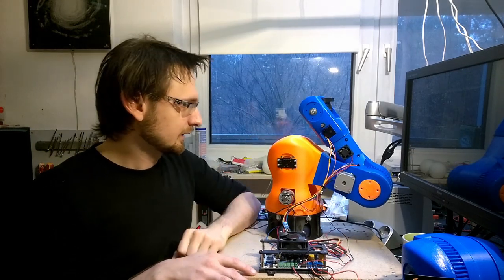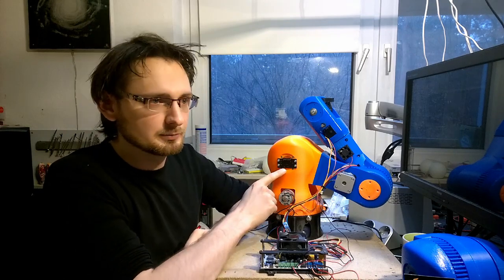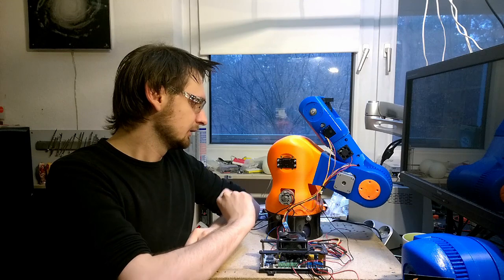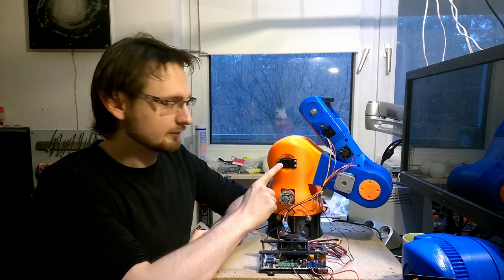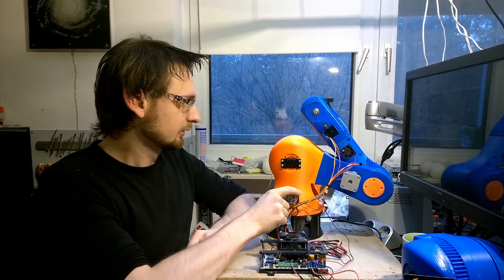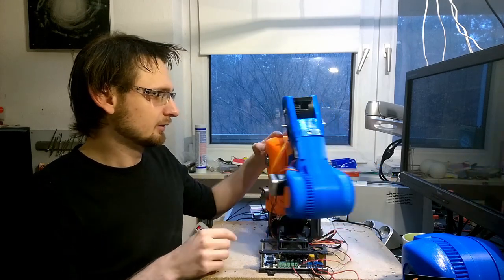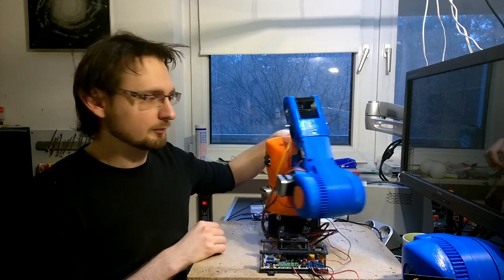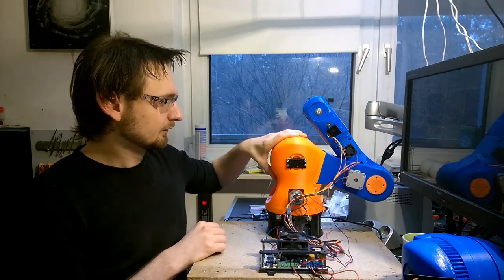I installed one I had from a previous project, and this is an AS5045 magnet encoder and it's directly mounted to the screw which holds the rest of the robot arm.